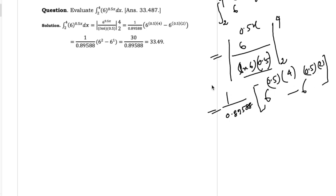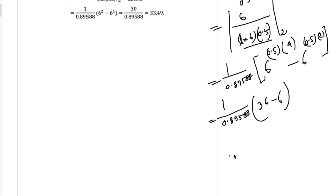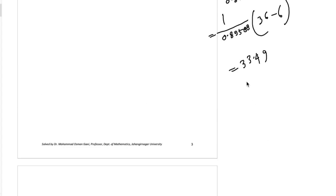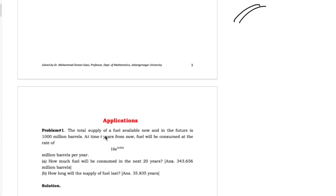Now, by using your calculator: 6 to the power 0.5 times 4 equals 6 to the power 2, which is 36, minus 6 to the power 0.5 times 2 which is 6 to the power 1, equals 6. So 30 divided by 0.89588 gives approximately 33.49. This is the result. In our next video, we will discuss how we can use exponential integration to solve some applications.